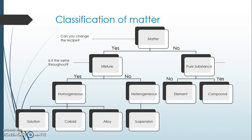For mixtures, the next question is: is it the same throughout? If it is the same throughout, it's a homogeneous mixture. Examples of homogeneous mixtures include cough syrup, Gatorade, tea, salt water, sugar water, and Kool-Aid.